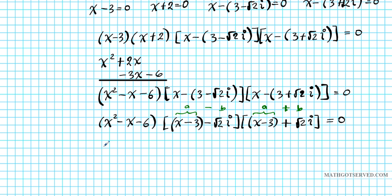So now we're going to have (X² - X - 6) times A², which is going to be (X-3)² minus B², which is (√2i)². How did this happen? Remember the formula: (A-B) times (A+B) is A² - B². So we just took advantage of the first formula we talked about, so let's go ahead and simplify this.